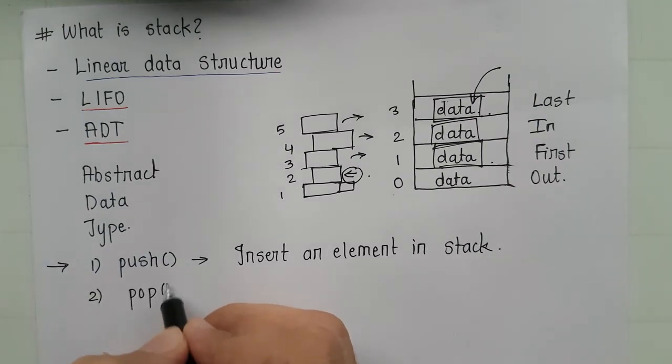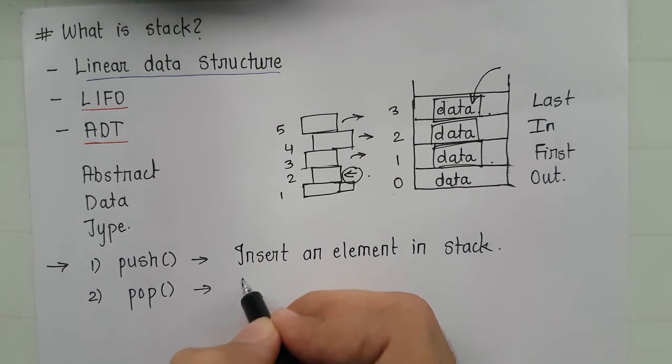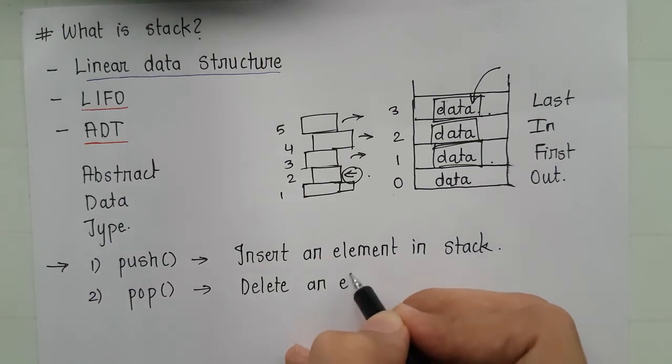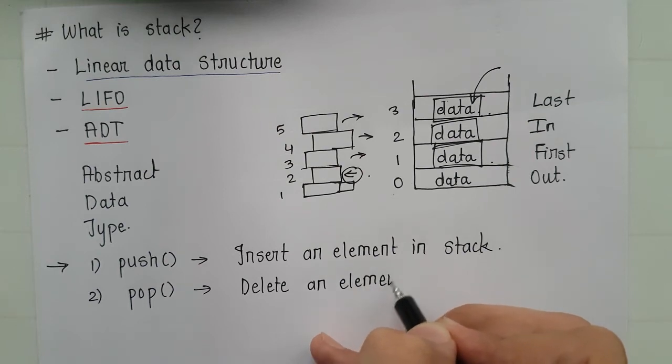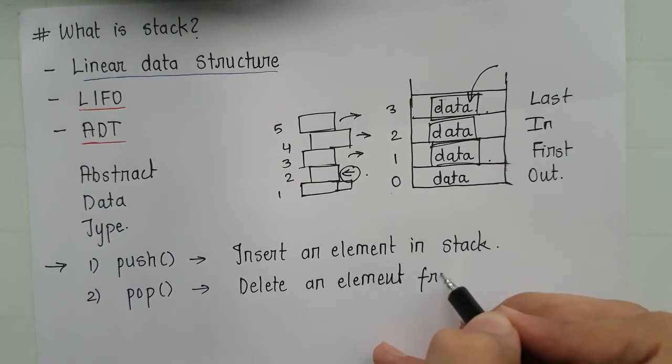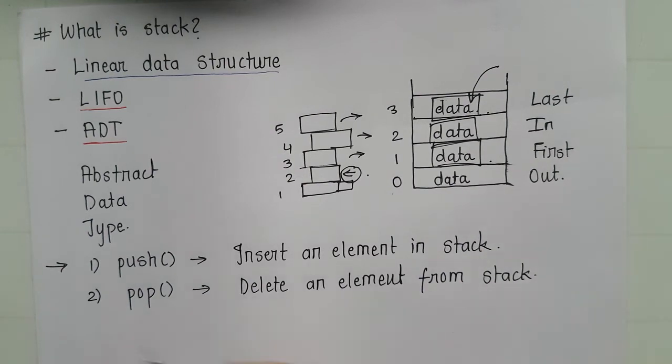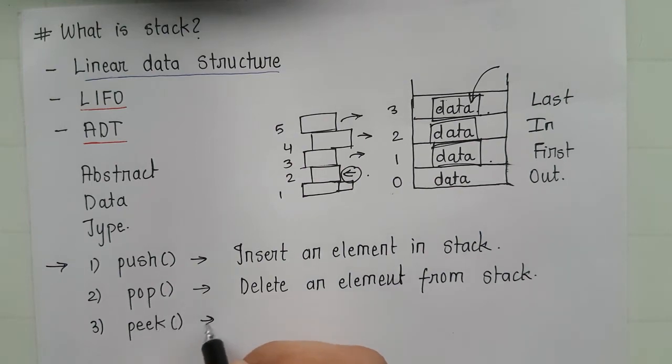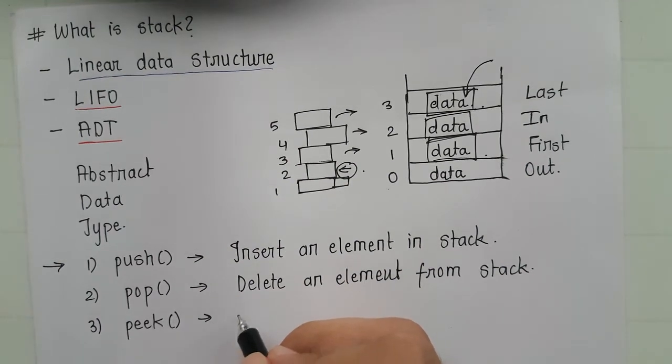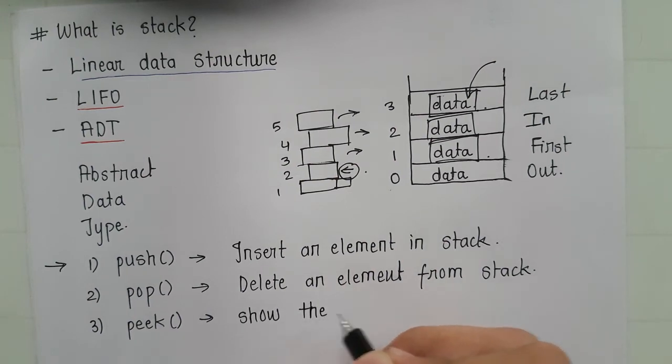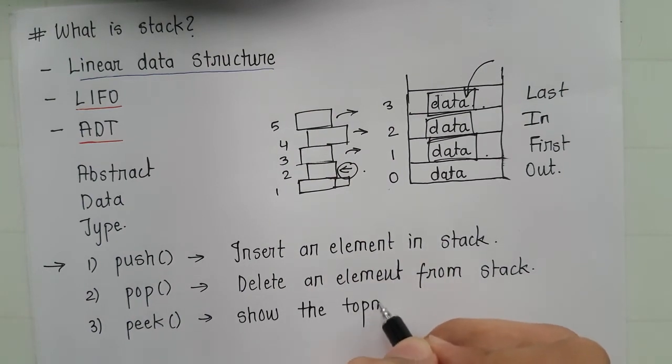Second operation is pop. It is used to delete an element from stack. And third one which is peak. It is used to show the topmost element of the stack.